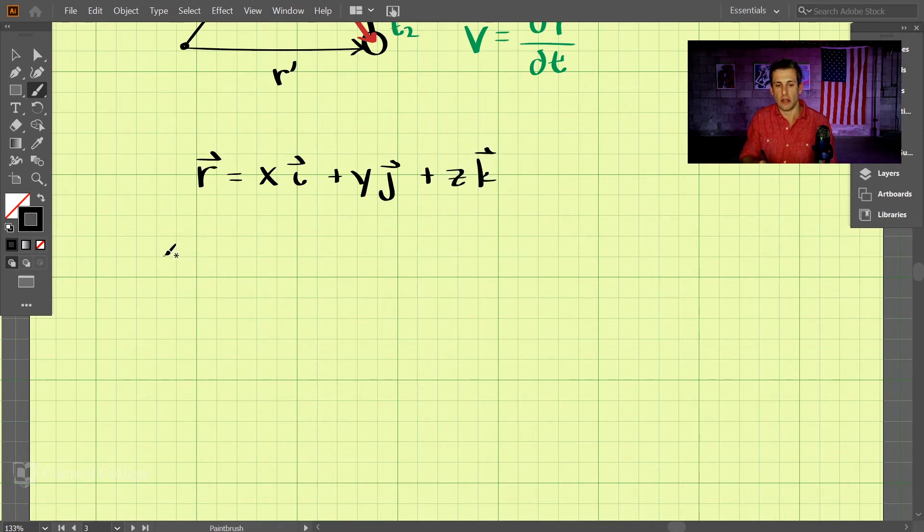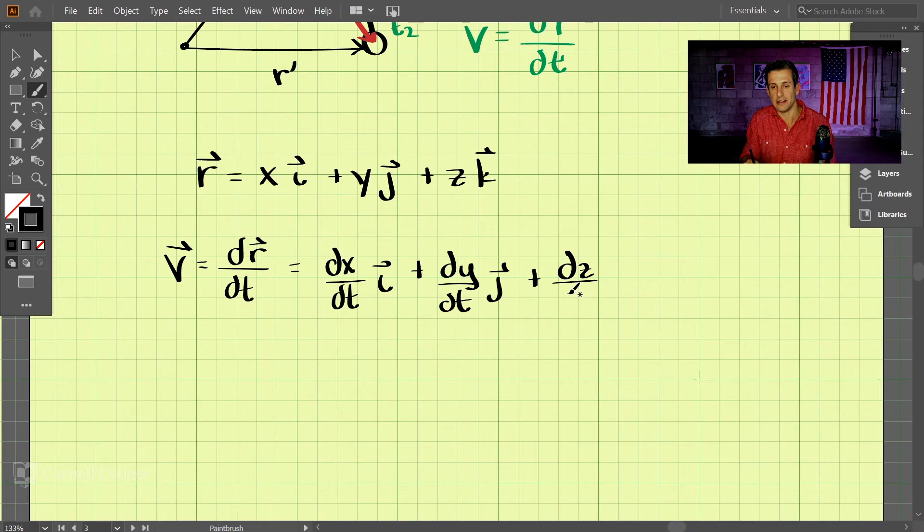If we want to find the velocity vector, that is dr/dt. What we would do is take the derivative of the x here. So we would take dx/dt, and that would be in the i direction,